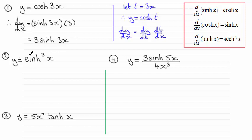Now for the second one, we've got y equals sinh³(x), which we can write as (sinh(x))³. And for this one we would need to use the chain rule. We would let t equal sinh(x). So if that's the case, then we've got y equaling t³.